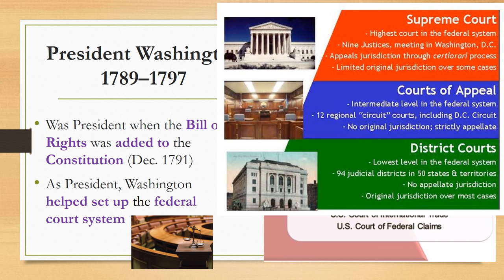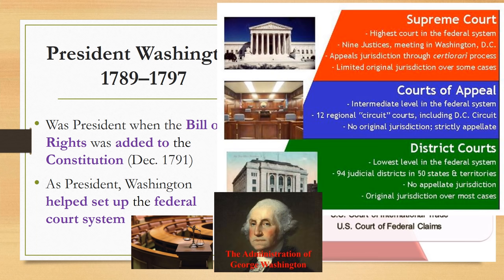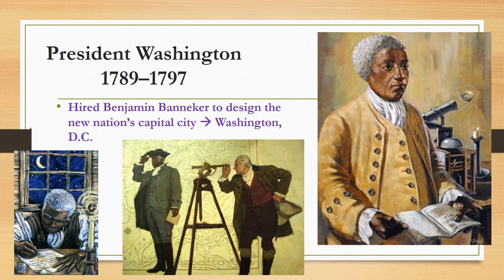Finally, if a case moves on from the Courts of Appeal up to the Supreme Court, this is the highest court in the land. There are nine justices; they meet in Washington DC. It has appellate jurisdiction through a special process and limited original jurisdiction over some cases. George Washington's administration is the administration that set up this three-tiered judicial system.